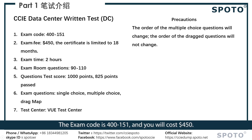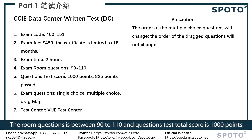The exam code is 400-151 and it will cost $450. It is valid for 18 months. The number of questions is between 90 to 110.